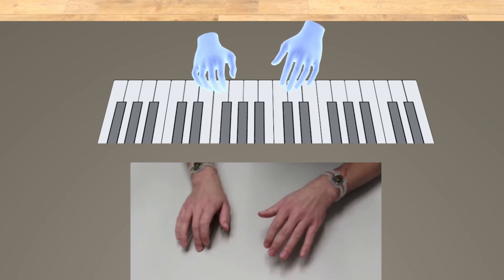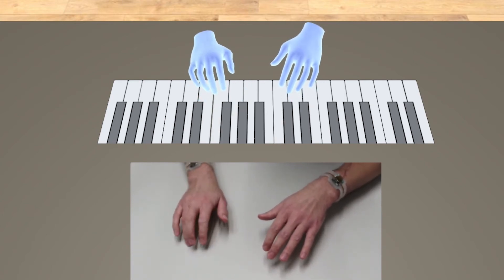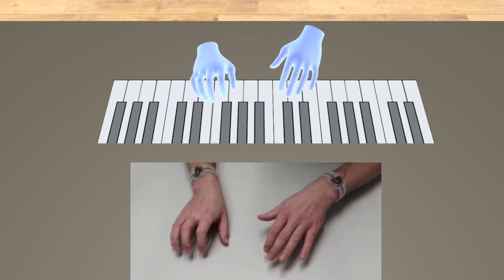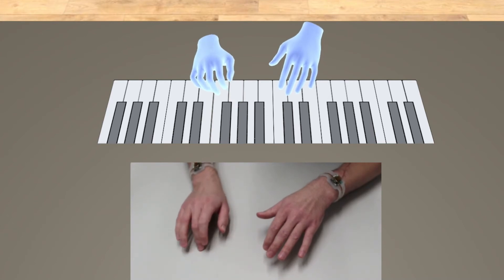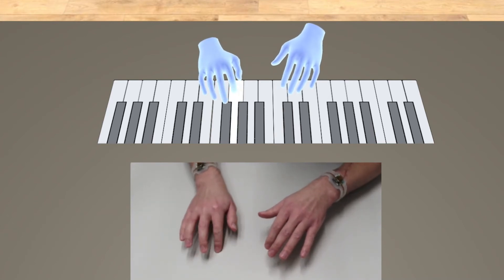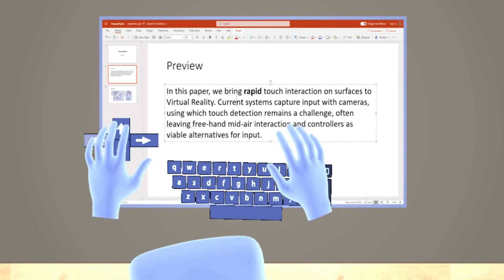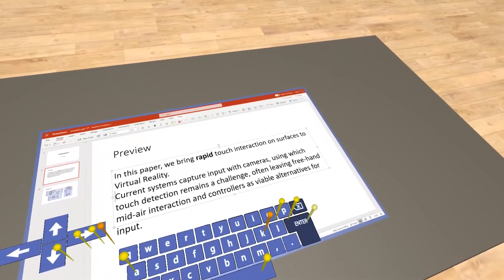TapID provides the familiar modality of bimanual touch interaction to VR, using our inexpensive sensing mechanism. TapID seamlessly integrates into existing VR and touch interfaces, enabling prolonged interaction with productivity applications in virtual reality.